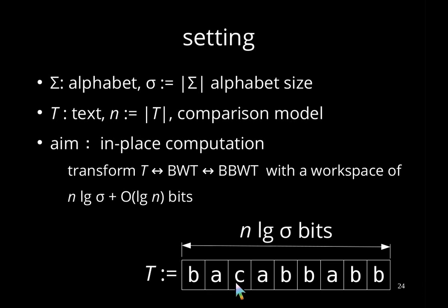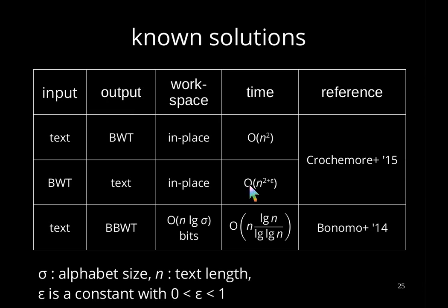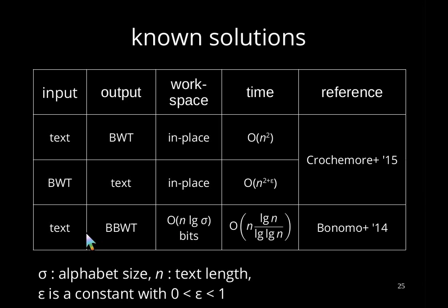Known solutions for in-place computations are due to Kroshmar and others, who took the text and computed the BWT or restored the text from it, using quadratic time for construction and additionally a multiplicative factor of N^ε for restoring. Another solution due to Bonomo and others can compute the BWT; although not originally proposed as in-place, we will later see we can make it in-place. Here epsilon is a constant between 0 and 1.